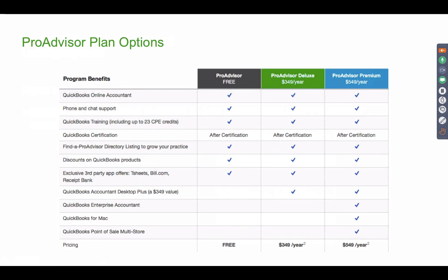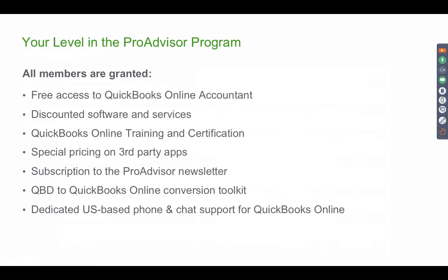If you're also supporting QuickBooks Desktop clients — QuickBooks Pro or QuickBooks Premiere — you pay $349 per year to get the QuickBooks Accountant software, which is updated every year. With that license, you can open your clients' QuickBooks Pro or Premiere files. If you have clients using QuickBooks Enterprise and want that certification and software, the Premium ProAdvisor subscription is $549 per year. But if you're only working with QuickBooks Online clients, you won't pay anything for the ProAdvisor program.